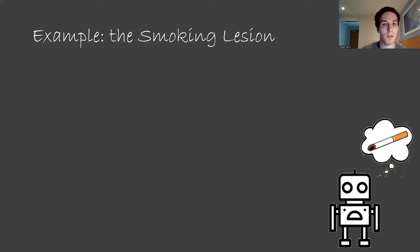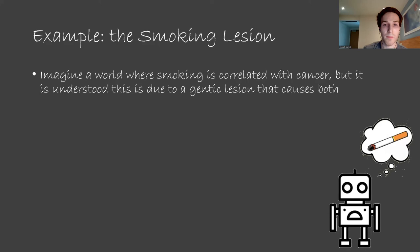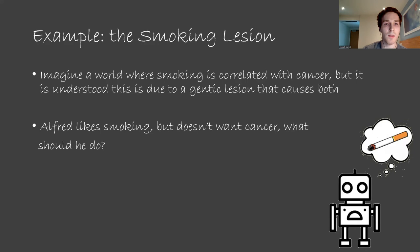In our world, smoking is strongly correlated with lung cancer. Imagine a world where this correlation is actually understood to be the result of a common cause: a genetic lesion that tends to cause both smoking and cancer. So in this world, smoking doesn't actually do any harm. It's just correlated to harm because of some underlying factor. For people who have this genetic lesion, they're more likely to get cancer whether they smoke or not. And for people without this genetic lesion, smoking also doesn't affect their cancer rate. Now, suppose an agent called Alfred enjoys smoking, but won't do it if it causes cancer. What should Alfred do?